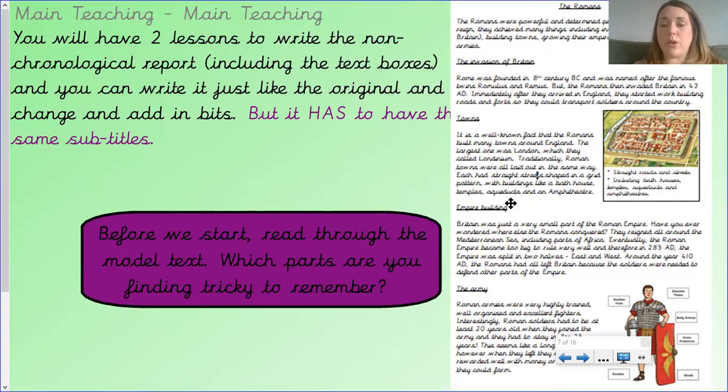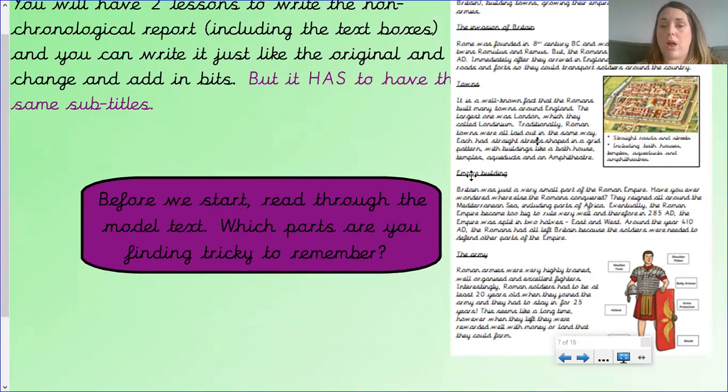Our third paragraph is all about empire building. Britain was just a very small part of the Roman Empire. Have you ever wondered where else the Romans conquered? I like that rhetorical question. You might like to put one of those in your writing. They reigned all around the Mediterranean Sea, including parts of Africa. Eventually, the Roman Empire became too big to rule very well, and therefore, in 285 AD, the empire was split in two halves, east and west. Around the year 410 AD, the Romans had all left Britain because the soldiers were needed to defend other parts of the empire.